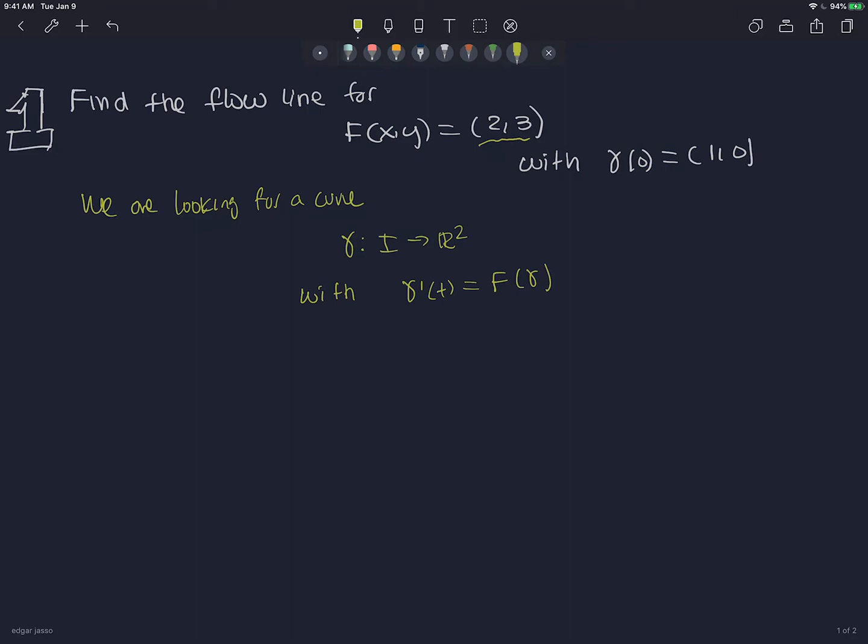So what I'm going to do is, if the gamma I'm looking for is (x(t), y(t)), then what we want, we need that gamma prime of t equals F of gamma. F of gamma is just constant. It's (2,3).